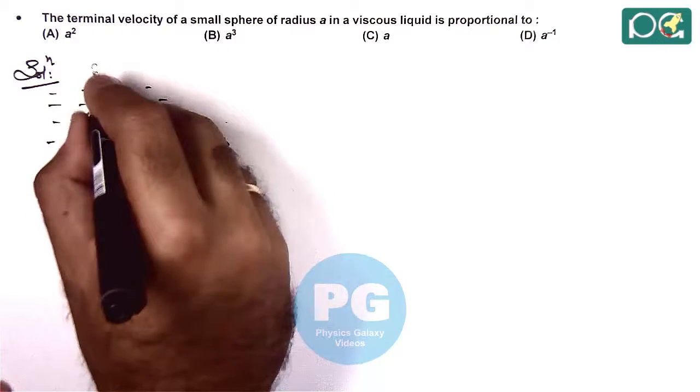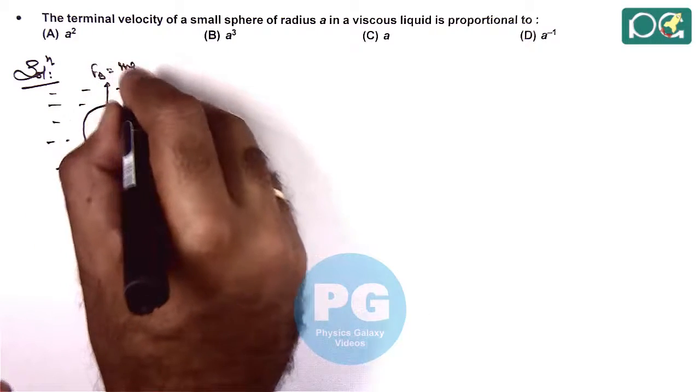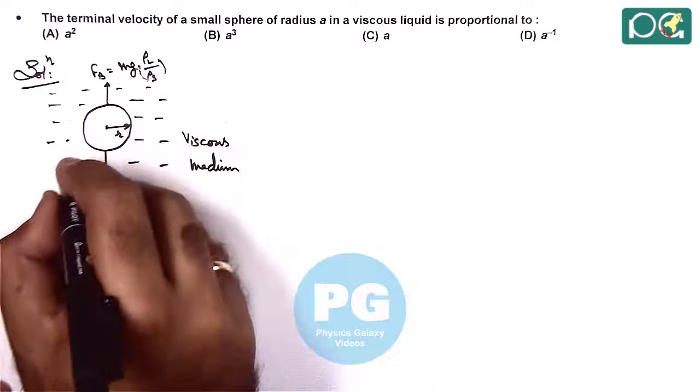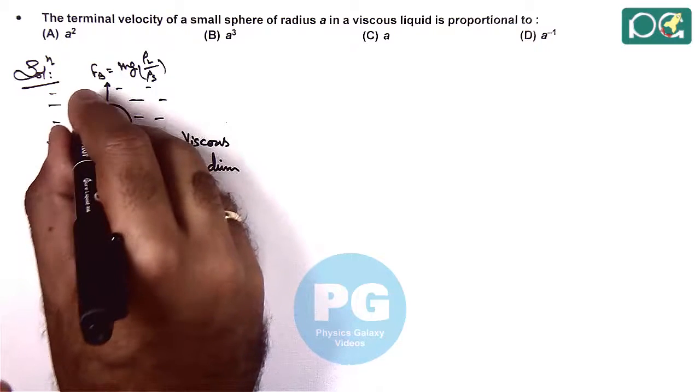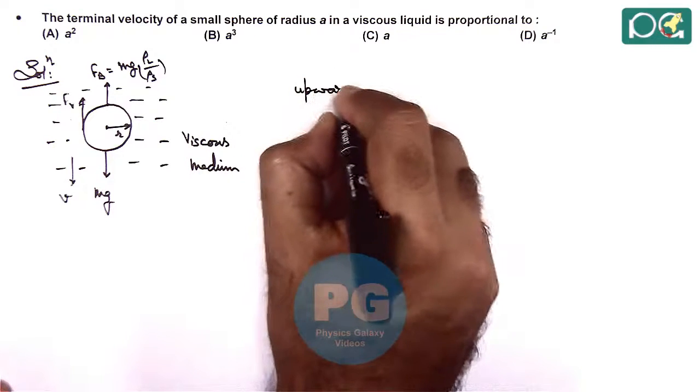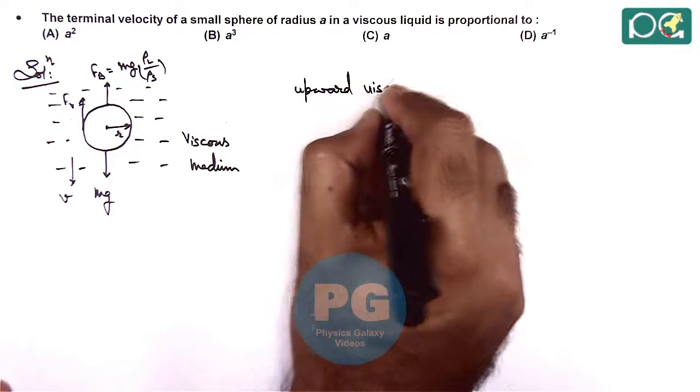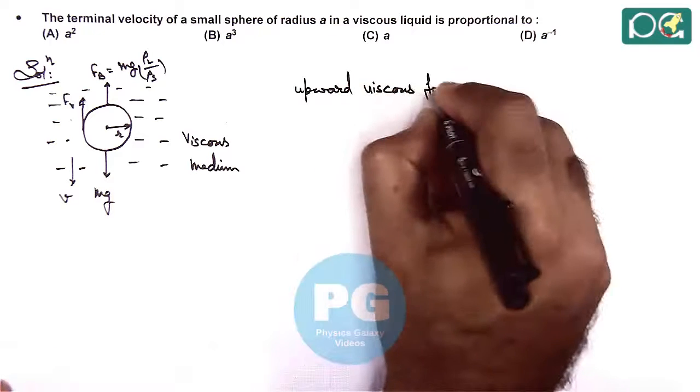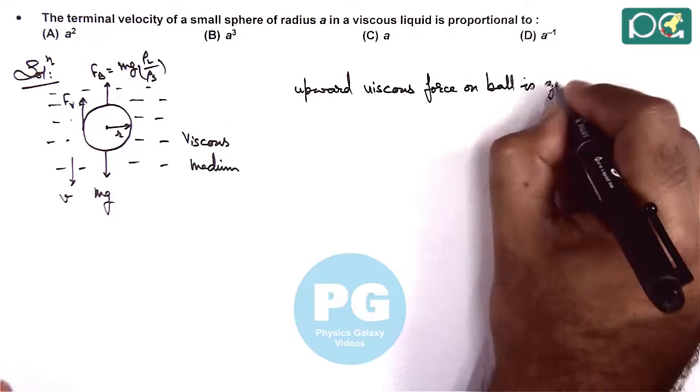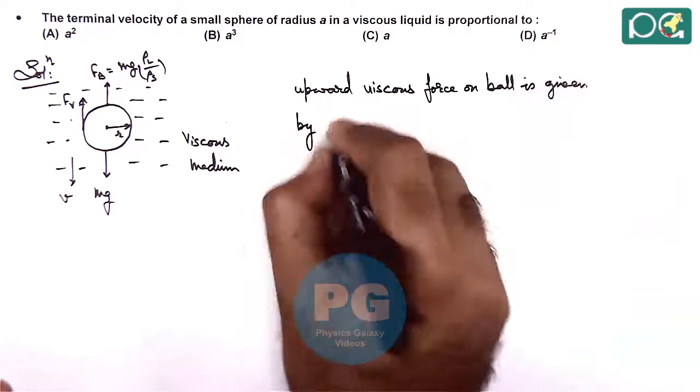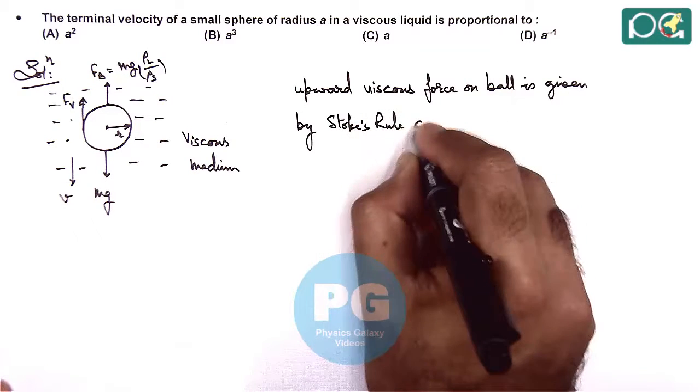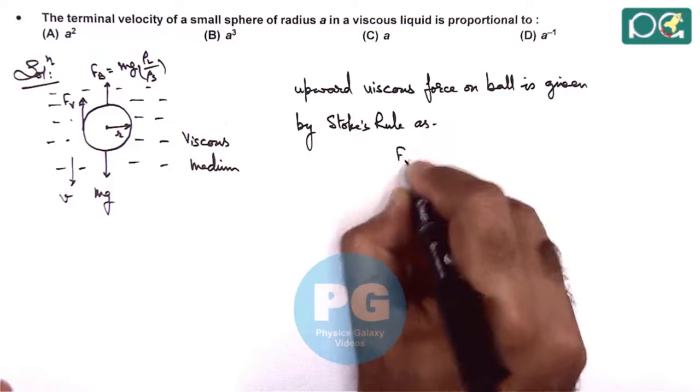Upward it will experience a buoyant force which is given as Mg times ρ liquid by ρ solid. And if it is coming down with speed V then it will experience a viscous force upward. We can write upward viscous force on ball given by Stokes rule as 6πηRv.